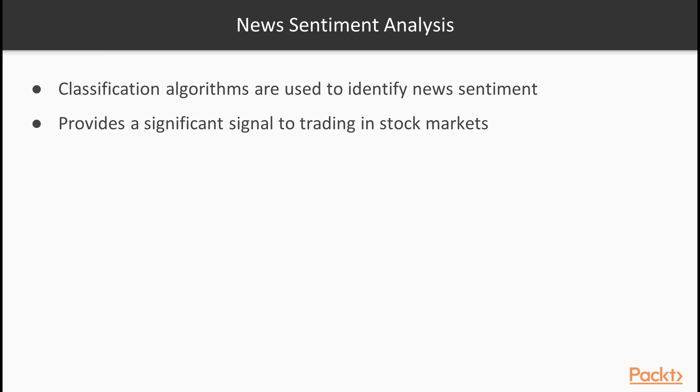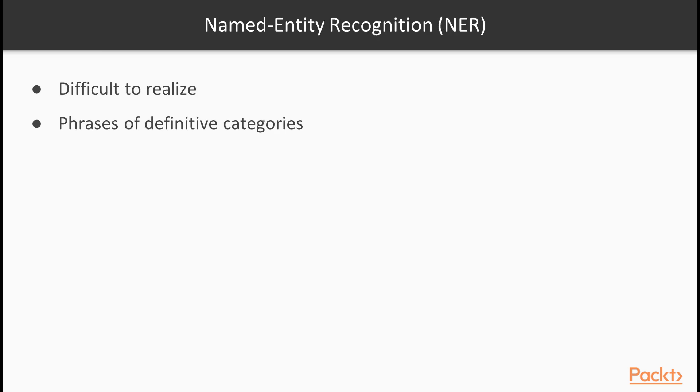For instance, classification algorithms are used to identify news sentiment, positive or negative as in binary cases or positive, neutral or negative in multi-class classification. News sentiment analysis provides a significant signal to trading in stock markets. Perhaps a text classification application that is difficult to realize is named entity recognition or NER.